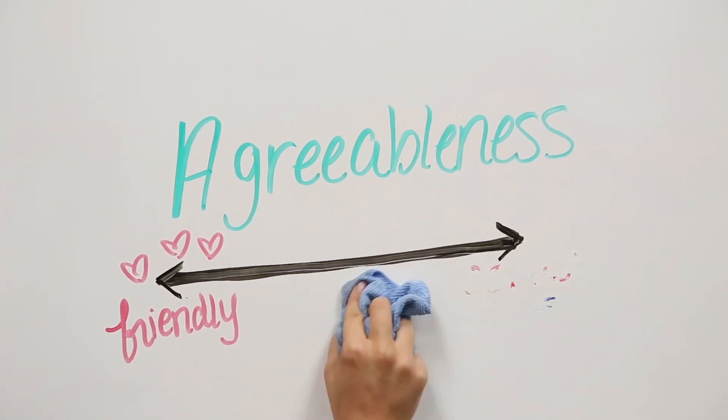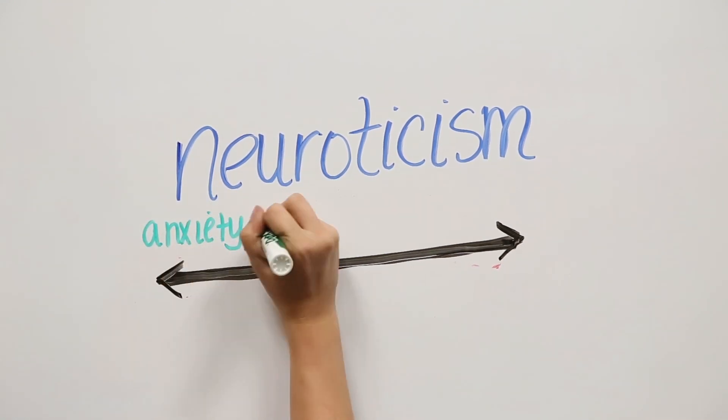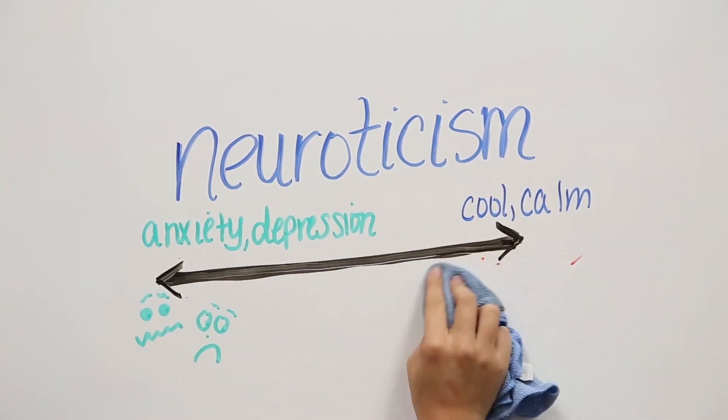The third dimension is neuroticism. Neuroticism is the tendency of a person to feel negative emotions like anxiety and depression. The other extreme is the characteristic of being cool, calm, and collected, especially under pressure.